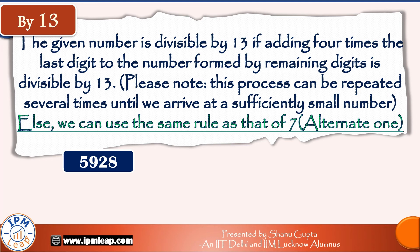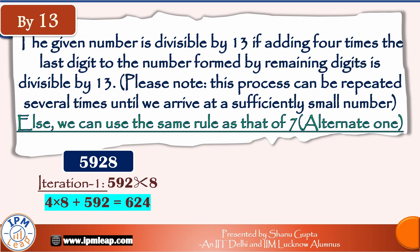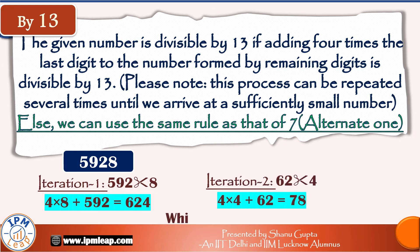The divisibility rule for 13 is a little complicated. A number is divisible by 13 if adding 4 times the last digit to the number formed by the remaining digits gives a result divisible by 13. For 5928: 4 × 8 + 592 = 32 + 592 = 624. Repeat: 4 × 4 + 62 = 16 + 62 = 78. Since 78 is divisible by 13 (13 × 6 = 78), our original number 5928 is divisible by 13.